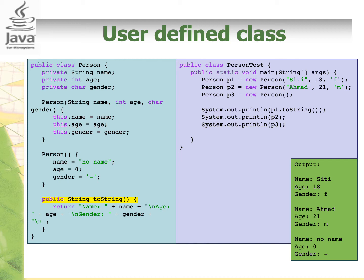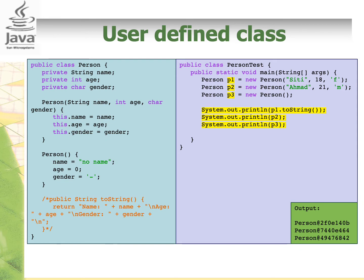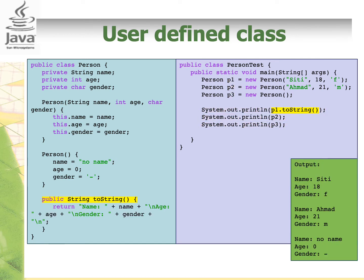Since we did not learn about the toString method previously, I'd like to introduce it here as it makes writing code much simpler. In Java, the toString method allows the object itself to be written — it can return the string representation of the object. We need to override the method; otherwise, it will display the address. For example, if we do System.out.println(P1), System.out.println(P2), and System.out.println(P3), it will display the addresses for all the objects. When we override the toString method to display name, age, and gender, those values will be displayed instead. Keep note that the method header for toString is String toString(), meaning that it returns a String.